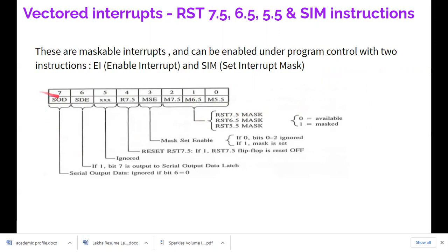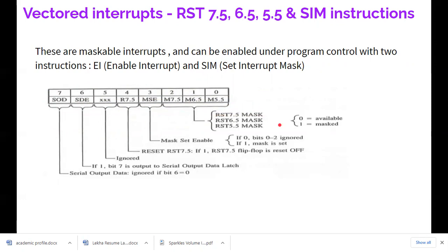The interrupts can be enabled through coding using two instructions: EI and SIM. There are eight bits, and each bit position corresponds to a specific function. D0 is responsible for masking RST 5.5. You place the appropriate data in the accumulator and execute SIM. The microprocessor always takes SIM information from the accumulator, and the respective interrupt inputs will be set or reset accordingly.